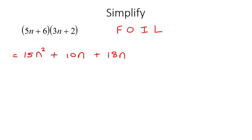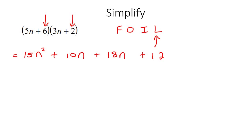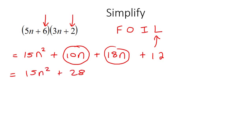The last step is L, which stands for last times last — the last one in this bracket times the last one in this bracket — and that's going to give you 12. Now look at all of these and see if any have the same variable. Here 10n and 18n are the same, so you combine them to become 28n. We're not squaring it — we're just adding now, so we keep it like that.